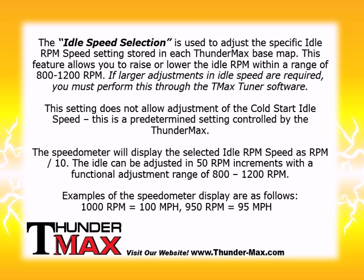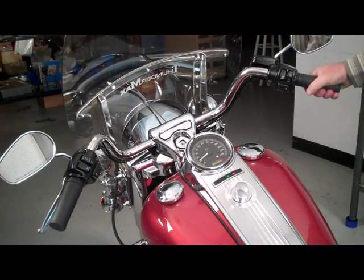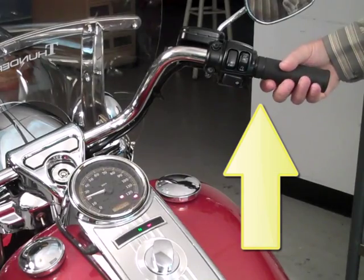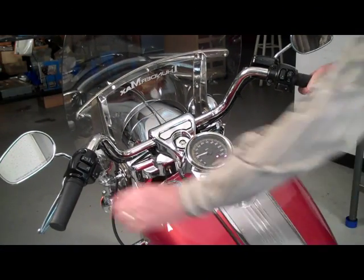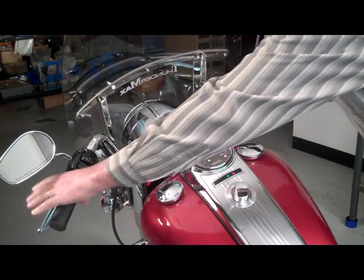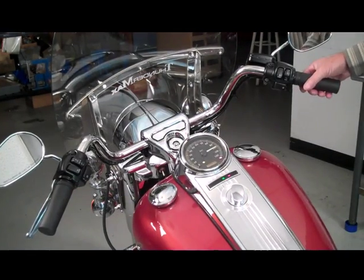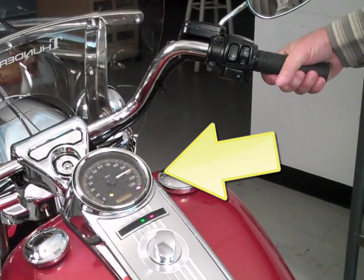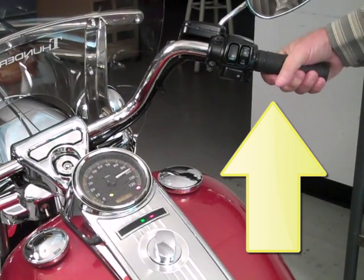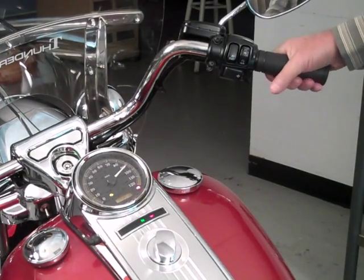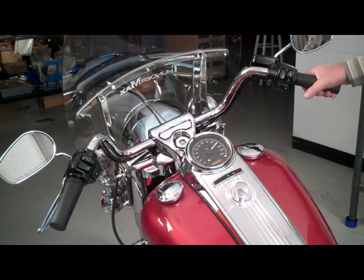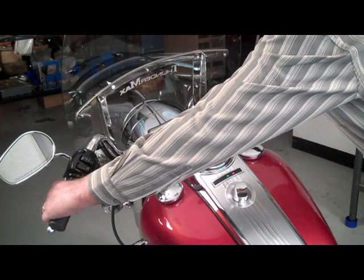The idle speed selection can be accessed from the Rider Programming Mode as follows. While in Rider Programming Mode, twist the throttle to achieve a speedometer reading of 20 mph. Fully pull and release the clutch to activate the category selection. The speedometer will display the current idle speed setting in the ECM. Use the throttle twist grip to choose the desired idle RPM speed setting, rolling it forward or back to move the selection needle.